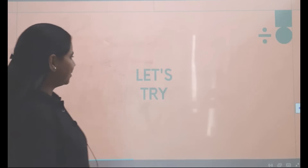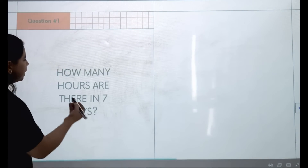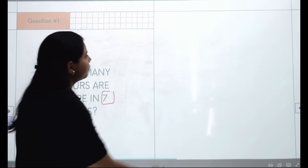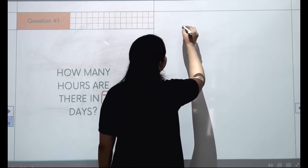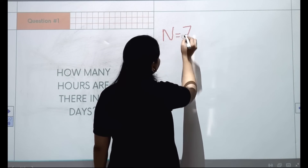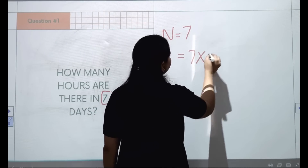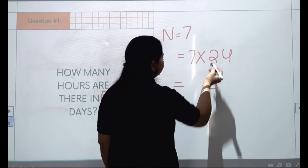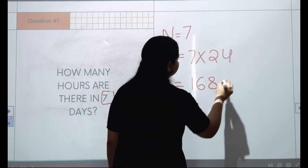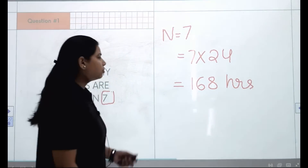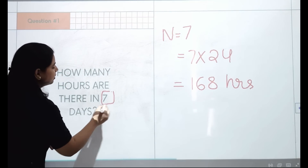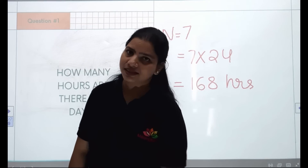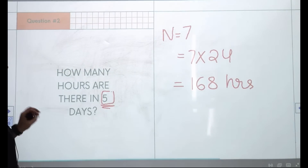Now it's practice time. Question number one: how many hours are there in seven days? We have n equal to seven, so we do seven times 24. Seven times four is 28, seven times two is 14, plus 2 gives 16 — that's 168 hours. So there are 168 hours in seven days.